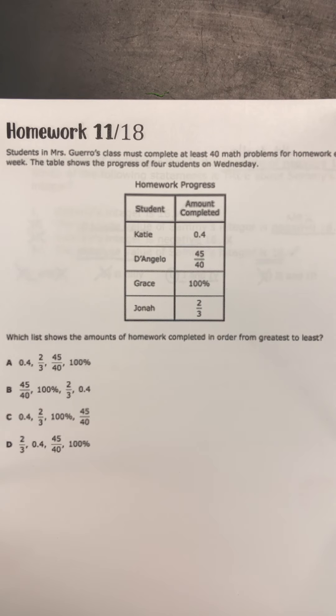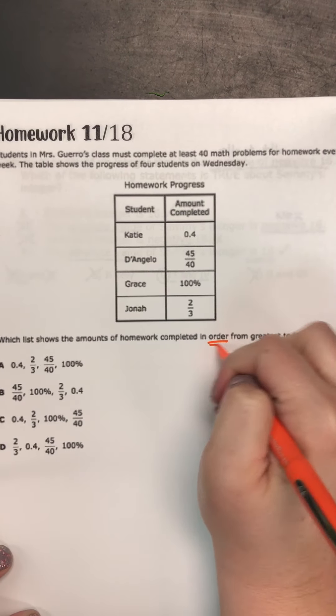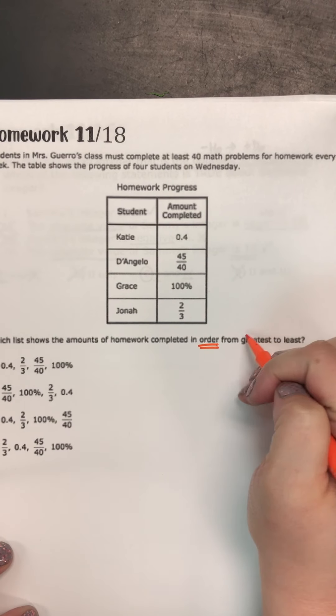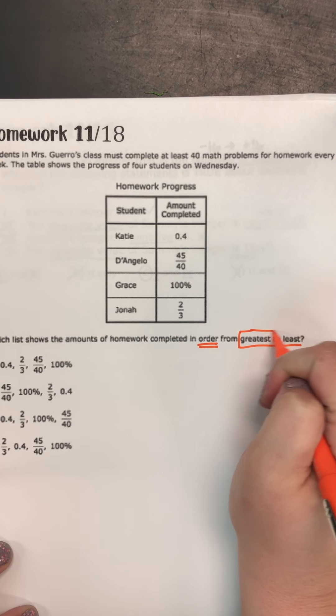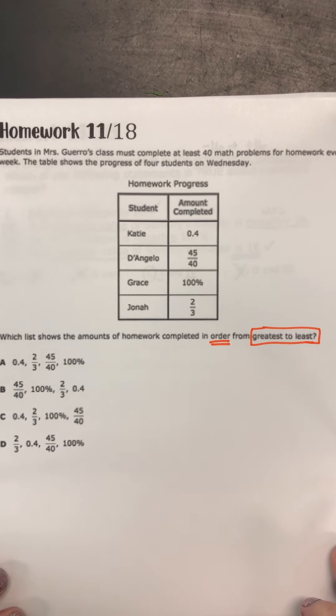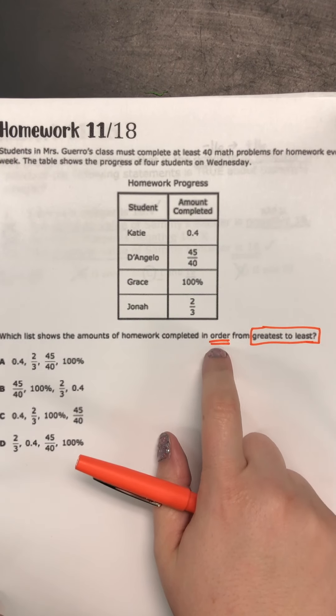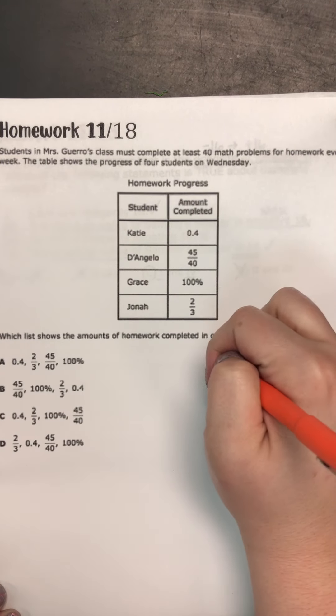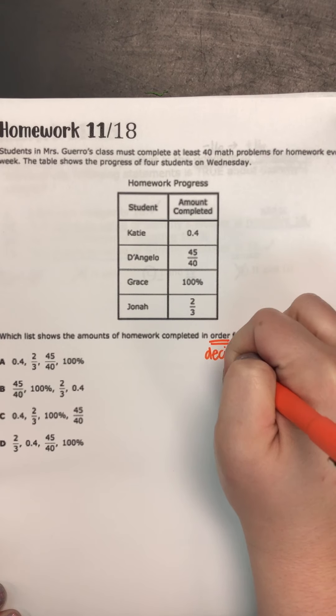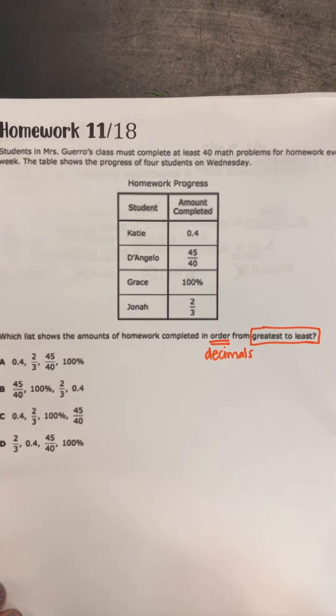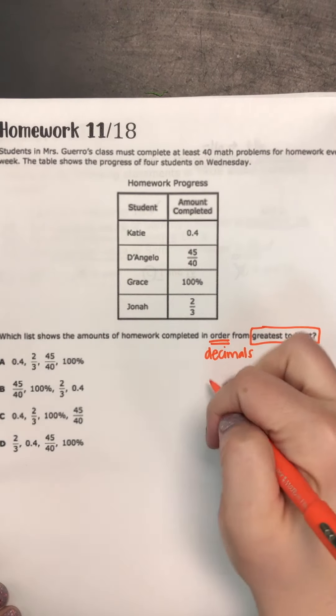So this one says, students in Ms. Gero's class must complete at least 40 math problems for homework every week. The table shows the progress of four students on Wednesday. Which list shows the amounts of homework completed in order from greatest to least? So we want the biggest to the smallest. Anytime we're trying to order numbers, we're going to turn them all into decimals.